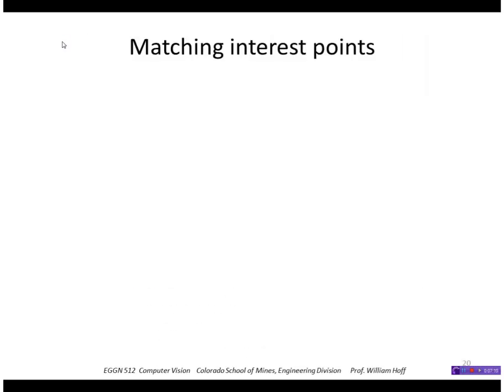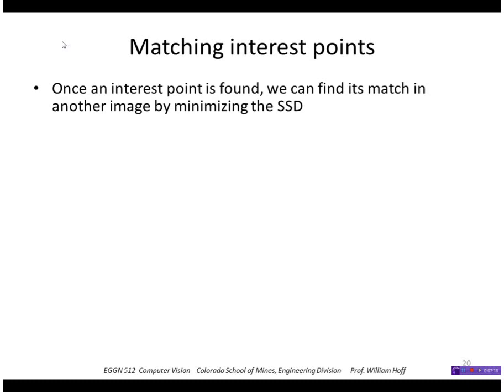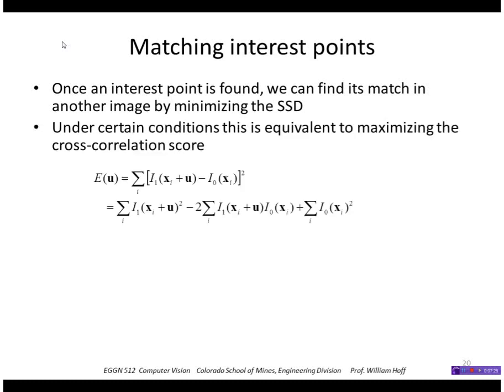Okay, so once we've extracted the interest points from the image that we think are going to be good to track, we want to match them to the other image. So we can do that by minimizing the sum of square differences with its match in the other image.